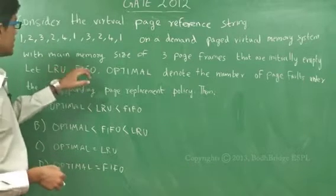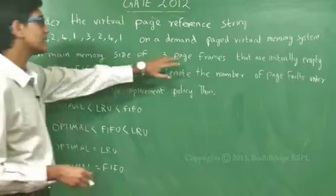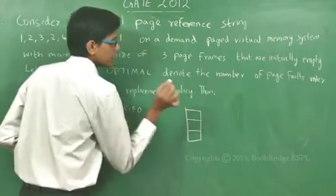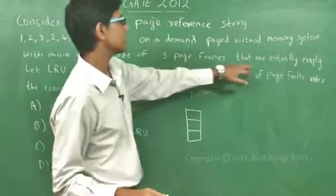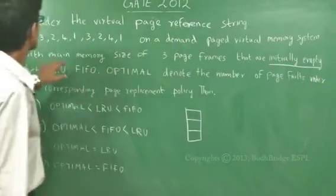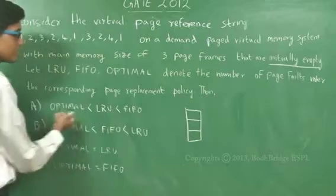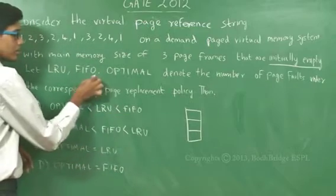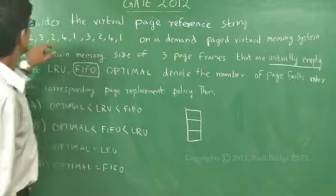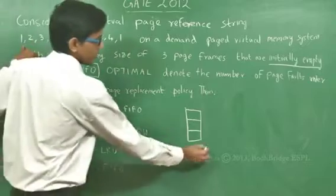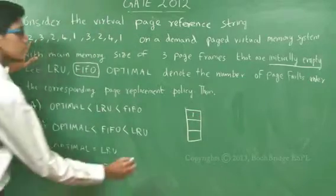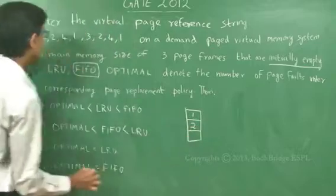It is given that the main memory size has three page frames, and the three page frames are initially empty. Let us first take the simplest of these mechanisms, which is FIFO. The first three references are 1, 2, and 3.